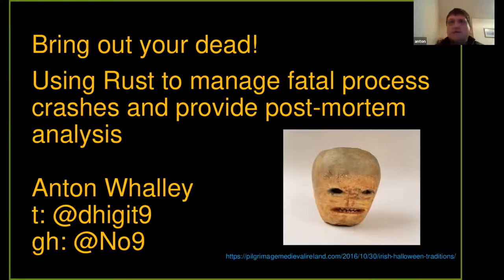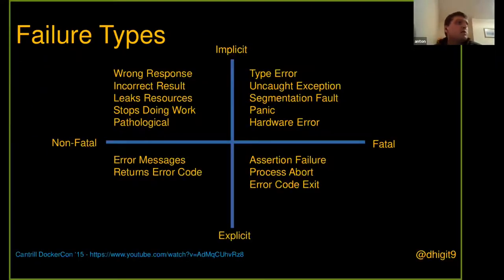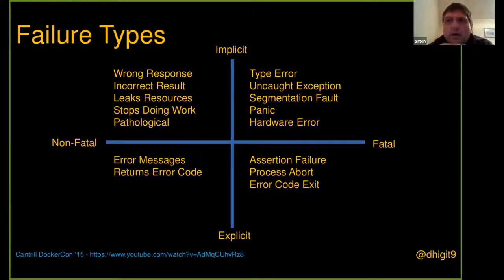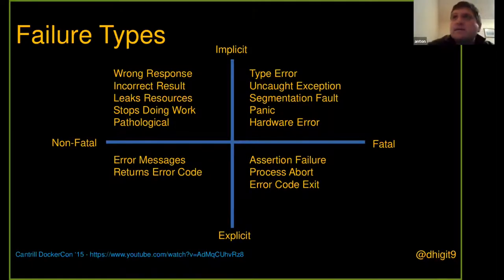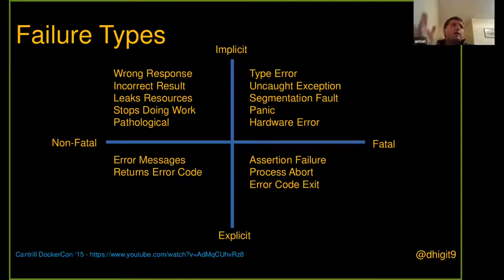Back in 2015 there's a guy called Brian Cantrell who did a talk at DockerCon and basically gave one of the better definitions I've seen for the different types of failure. As a software industry we don't really have good categorization of errors and the types of errors and the best way to analyze those, but we are slowly getting there as more conversations happen around observability.